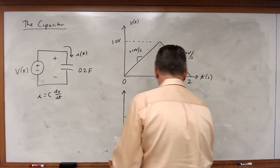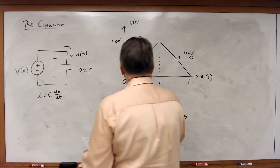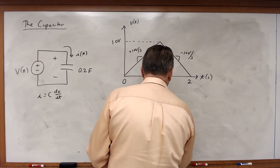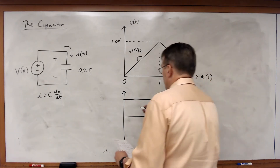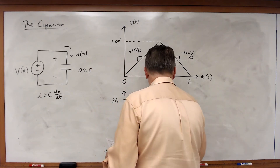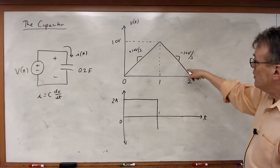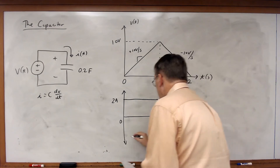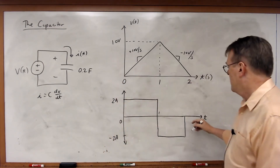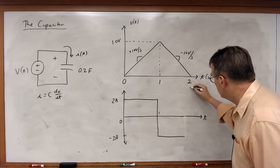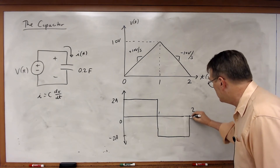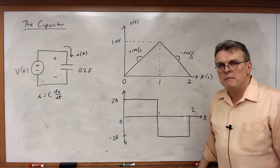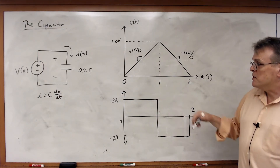Now I just plug this into the equation and graph out the current. 10 volts per second times 0.2 gives a current of 2 amps from 0 to 1 second. Then as the slope goes negative, minus 10 times 0.2, I'll have a current of minus 2 amps. So there is my current — you can see the current matching that derivative times the value of the capacitor. This is my current I of t.